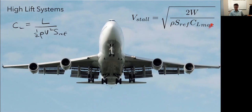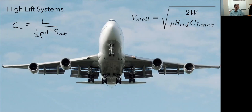The thing we have the biggest control over is CL_max. For commercial aircraft, the conditions we want at cruise are very different from takeoff and landing. At cruise we want a low-drag streamlined shape, but at takeoff and landing we want to create lots of lift and don't care as much about drag. So we want variable geometry - a configuration with tons of lift for takeoff and landing that we can fold back into a compact shape for cruise. This is what's called the high lift system.